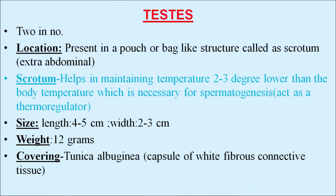The testes are two in number and are located in a pouch or bag-like structure called the scrotum. The scrotum is extra-abdominal and is very important in spermatogenesis as it helps in maintenance of a temperature 2 to 3 degrees lower than body temperature, which is necessary for spermatogenesis. The scrotum acts as a thermoregulator. The size of the testes: length is 4 to 5 centimeters, width 2 to 3 centimeters, and each testis weighs about 12 grams.